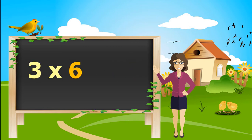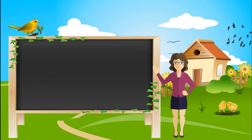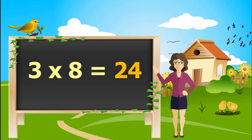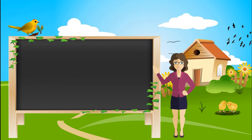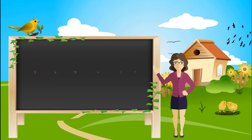3 sixes are 18. 3 sevens are 21. 3 eights are 24. 3 nines are 27. 3 tens are 30.